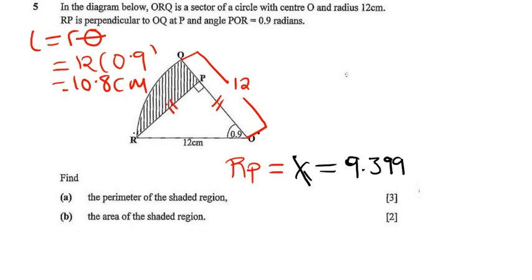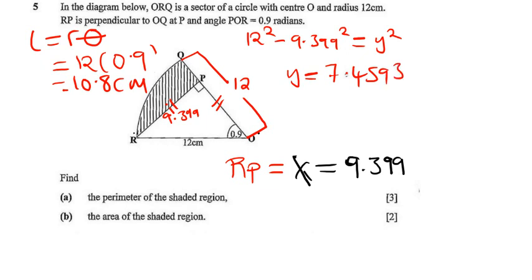We've already found this part to be 9.399 and this is 12. We know this is the hypotenuse. From the Pythagorean theorem, we know that 12 squared minus 9.399 squared should give us the other side, y squared. So 12 squared minus the answer we have squared, and then the square root. The value of y is approximately 7.4593.